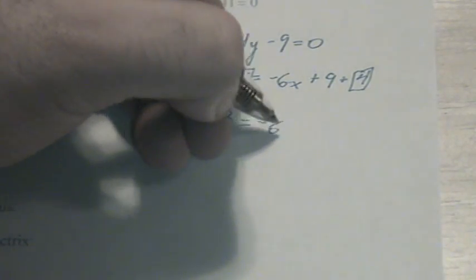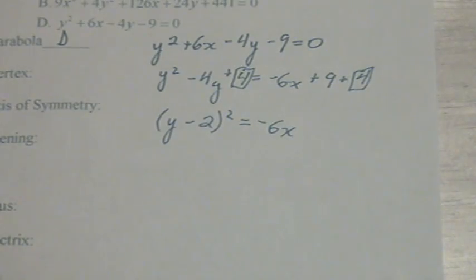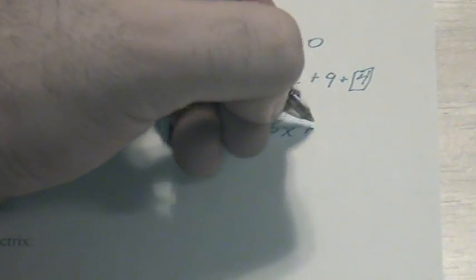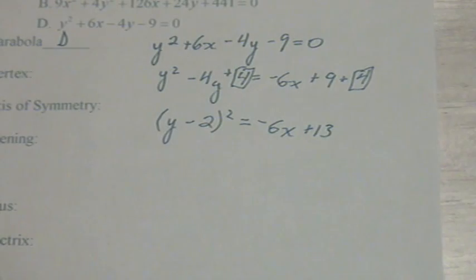On the right hand side, we have negative 6x and 9 and 4 give us 13.